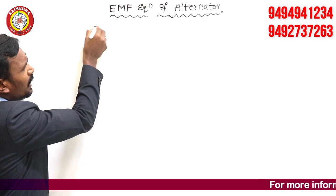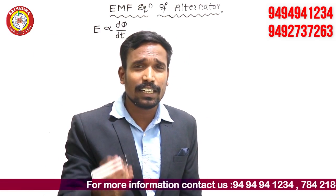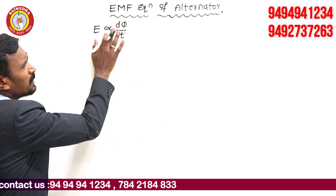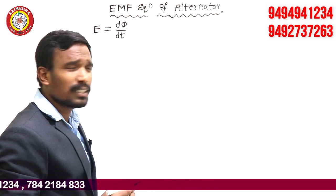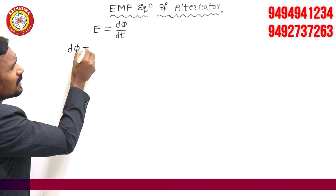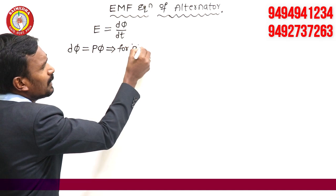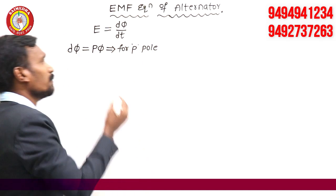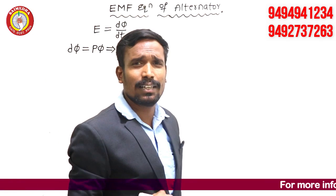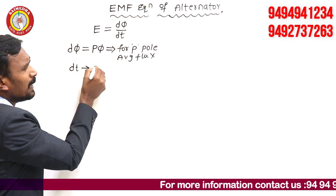Generally, EMF E is directly proportional to dΦ/dt — rate of change of flux. Of course, n into dΦ/dt, where n means turns — I will take T here in terms of turns. Simply, E is equals to N into dΦ/dt. Here dΦ is the average flux. Generally, dΦ is equals to p times of Φ for p poles. For p number of poles, the average flux dΦ equals pΦ — because one pole gives Φ, p poles give p×Φ. Then dt is the time to complete one revolution.